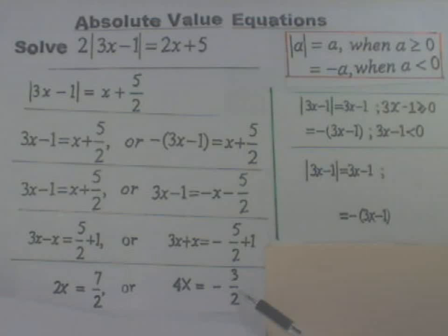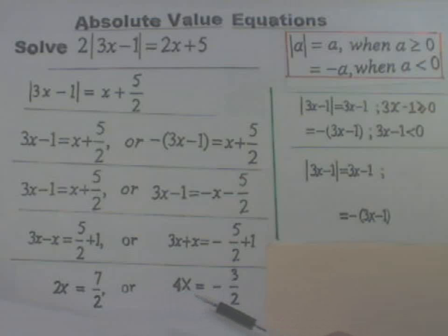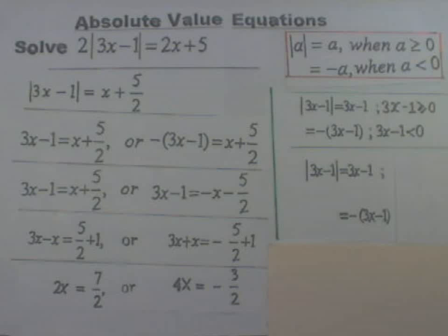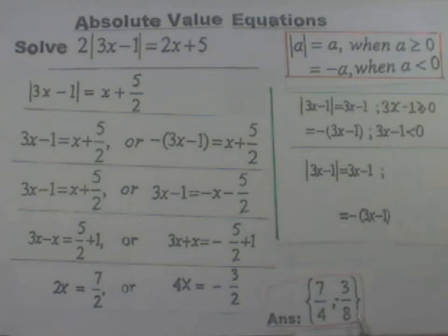By the way, if you are rusty on your fractions, you do need to review. One more step: divide both sides by 2 for the first equation, and divide both sides by 4 for the second. That gives you x equals 7 over 4, and from the second equation x equals negative 3 over 8. So there is the answer — the solution set is 7 fourths or negative 3 eighths. Or is it? It is always a good idea to check your solutions.